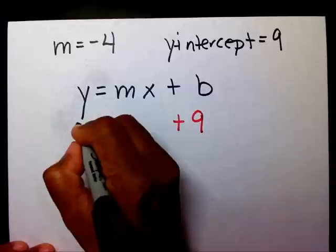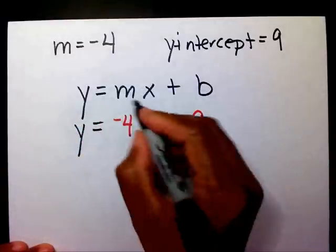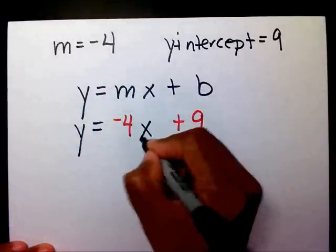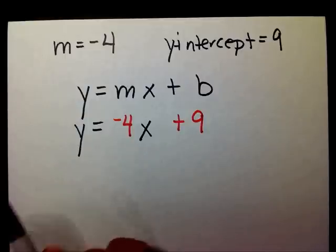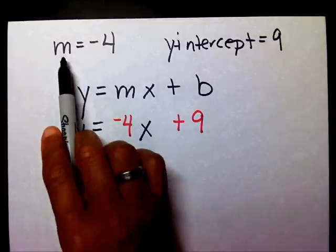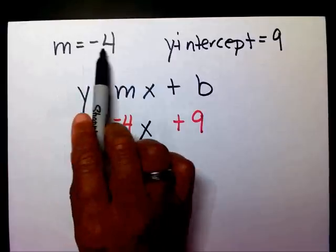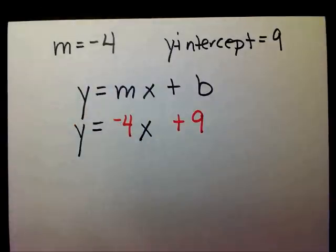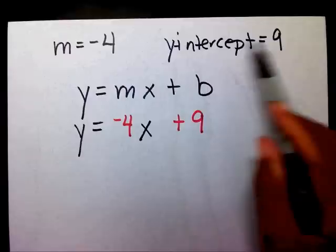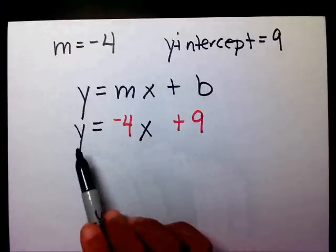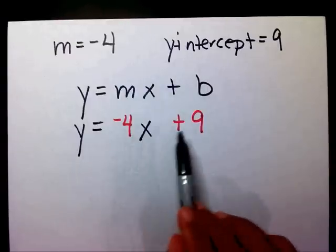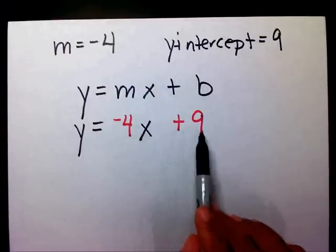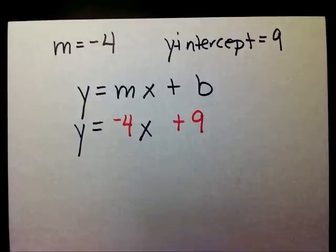I'm going to bring down my y equals and my x. Therefore, if the slope equals negative 4 and the y-intercept equals 9, then I can say that y equals negative 4x plus 9 in slope-intercept form.